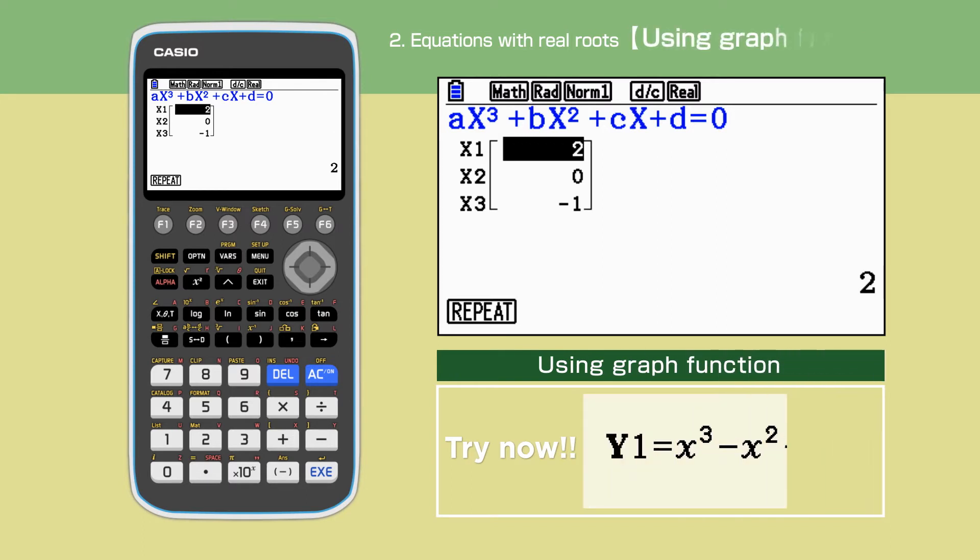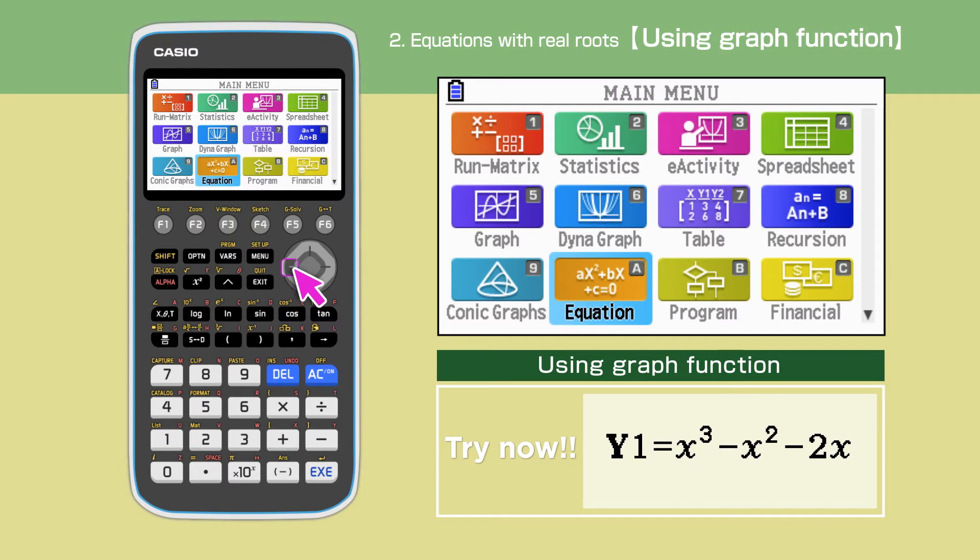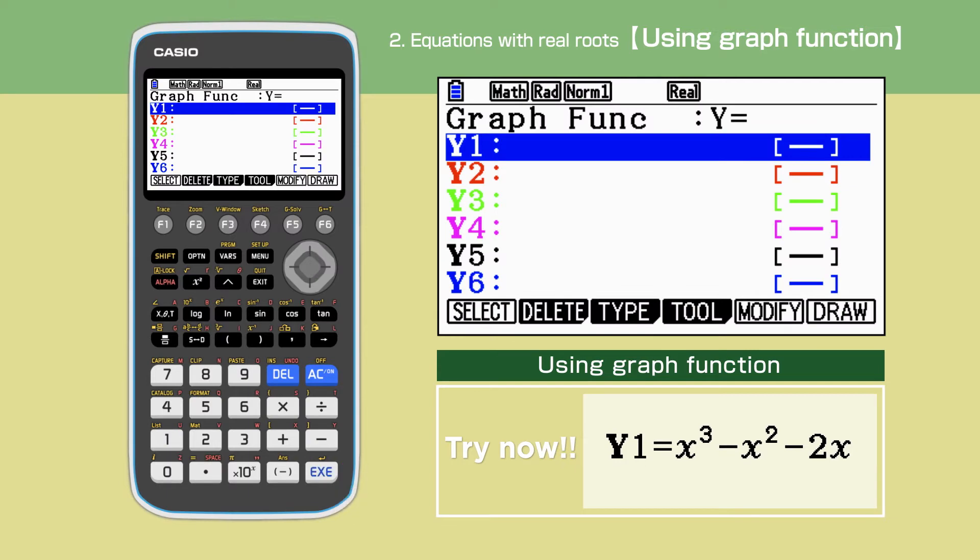Next, we are to solve the same equation graphically. Press the menu button to open the main menu, then select the graph function. Check that the graph function shows y equals, then enter the cubic function, y equals x cubed minus x squared minus 2x. x needs to be entered using the x, theta, t key.